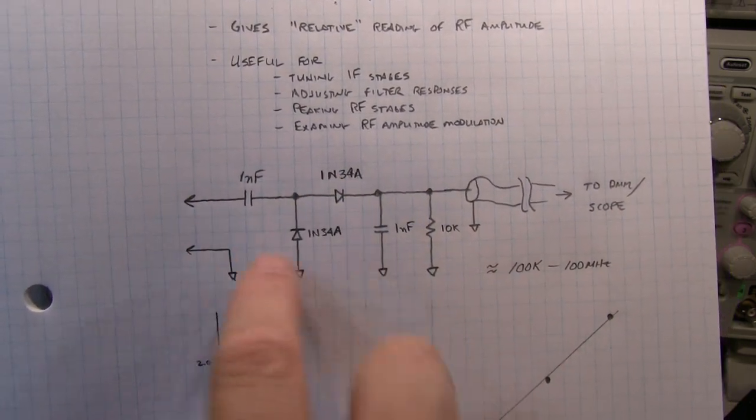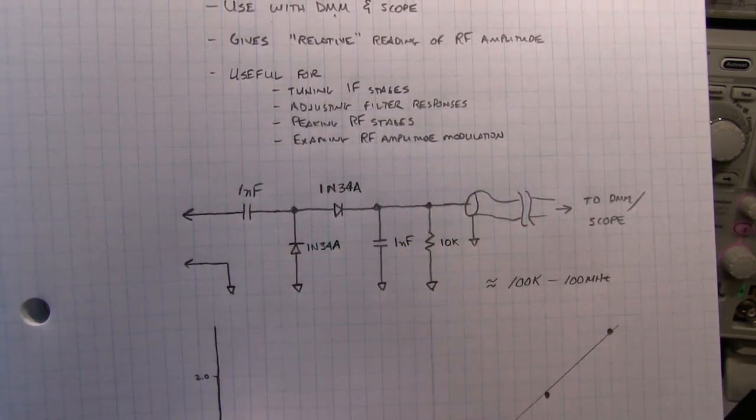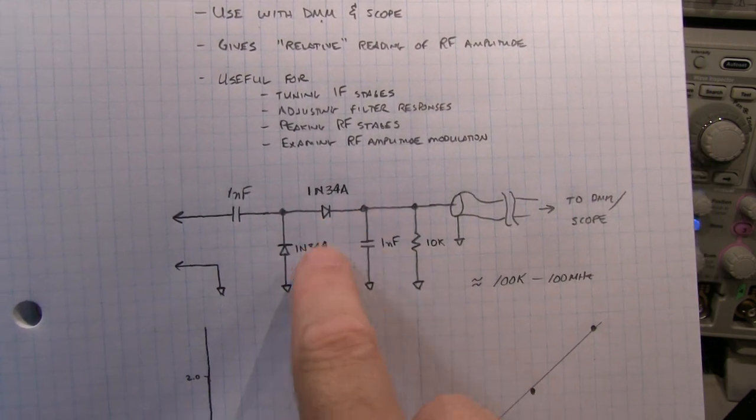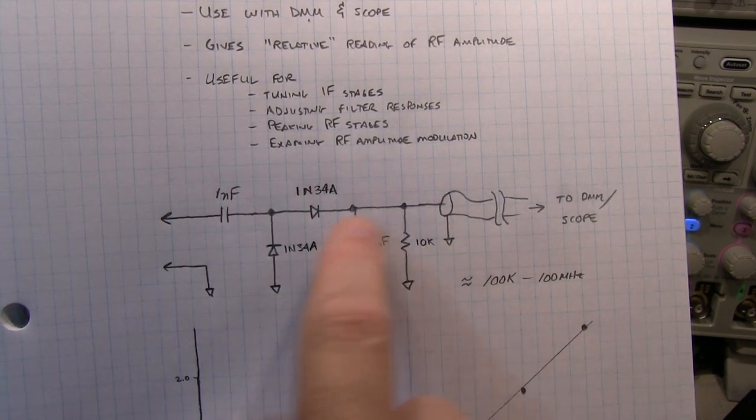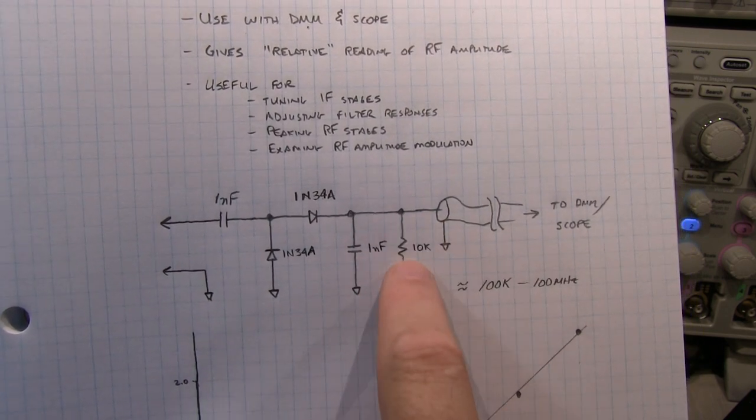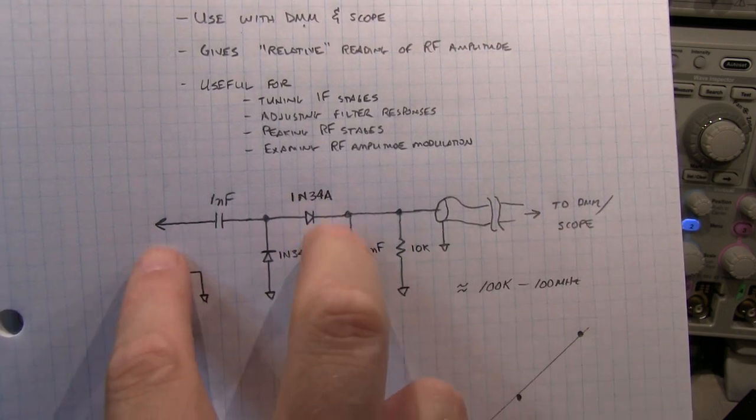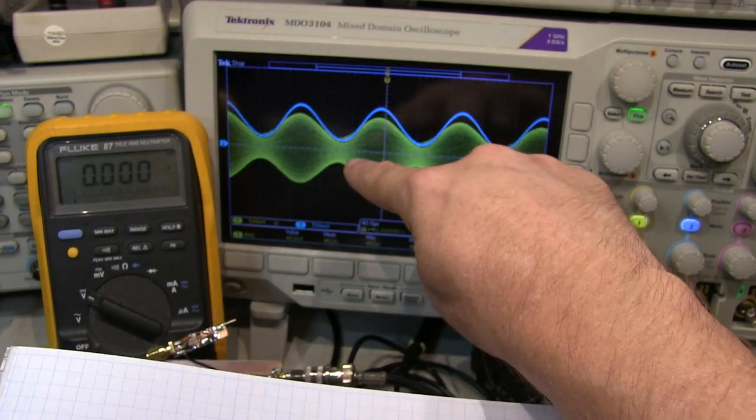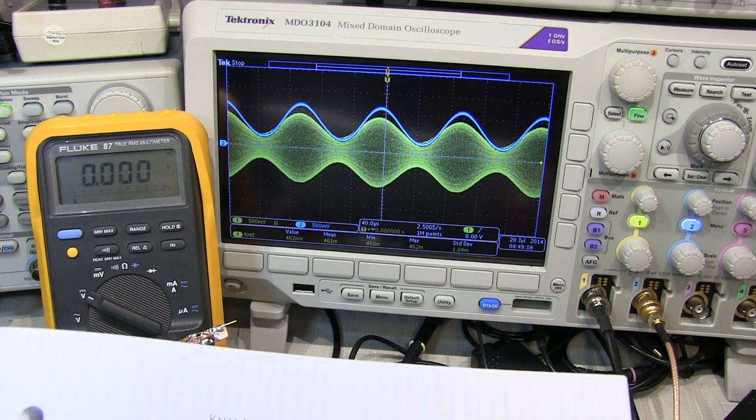So that process continues until essentially this capacitor gets charged up with something that's reasonably close to the peak-to-peak RF amplitude. Of course, there's going to be losses with the diode capacitance and the diode voltage, but it basically gives you an output here that is proportional to the RF amplitude. I have included a 10K resistor to basically pull the charge off of that capacitor so that this thing will respond to variations or amplitude modulation like we're showing on the screen here. So this is an AM modulated signal, and that's the detected output that is shown through the probe.